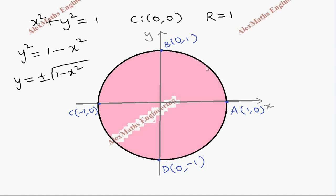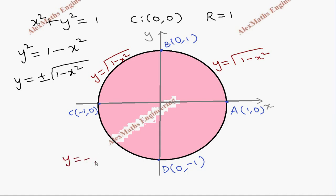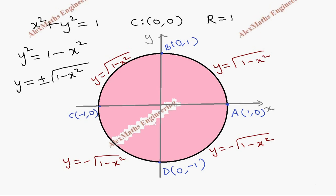Each boundary arc has a separate equation. For the arc from A to B and B to C, y is positive, so y equals root(1 minus x²). For the arc from C to D and D to A, y is negative, so y equals minus root(1 minus x²).